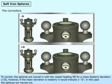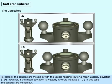To correct, the spheres are moved in with the vessel heading northeast for a mean easterly deviation, positive D. However, if the mean deviation is westerly, it would indicate a negative D. In this case, the spheres are moved out.